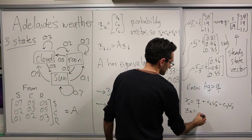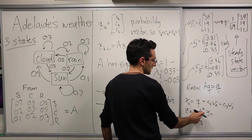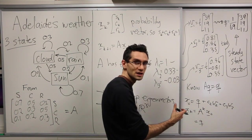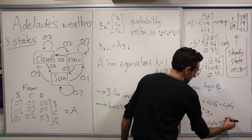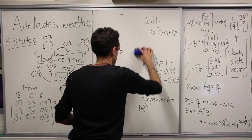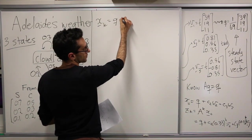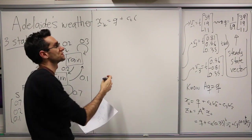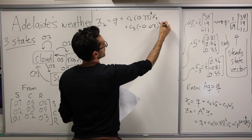Then xk is going to be A to the k times x0. And this becomes q—k copies of A multiplied by q still gives you q because the eigenvalue is 1—plus c2 times 0.33 to the k times v2, plus c3 times minus 0.03 to the k times v3. So that's the eigenvalue k, that's the eigenvalue k. So we have a formula here for xk. xk is going to be q plus c2, which is just a number representing our initial state, times 0.33 to the k times v2, plus c3 times minus 0.03 to the k times v3.